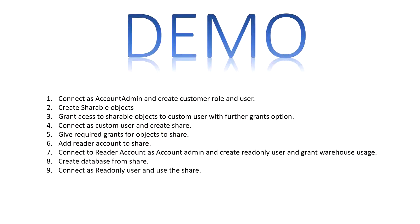What we are going to see in the current demo are nine different steps. First, we will connect as account admin and create a custom role and user. Then we will create shareable objects — all the objects we want to share to the read-only user. Then we will grant access of those shareable objects to the custom user with the further grant option so that they can use those objects for grants.